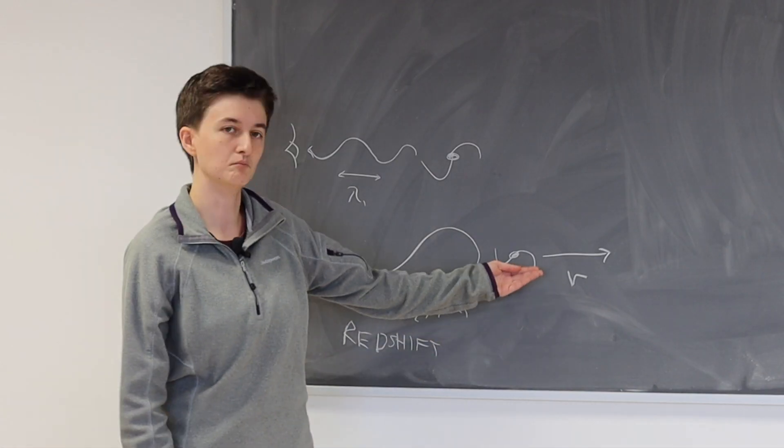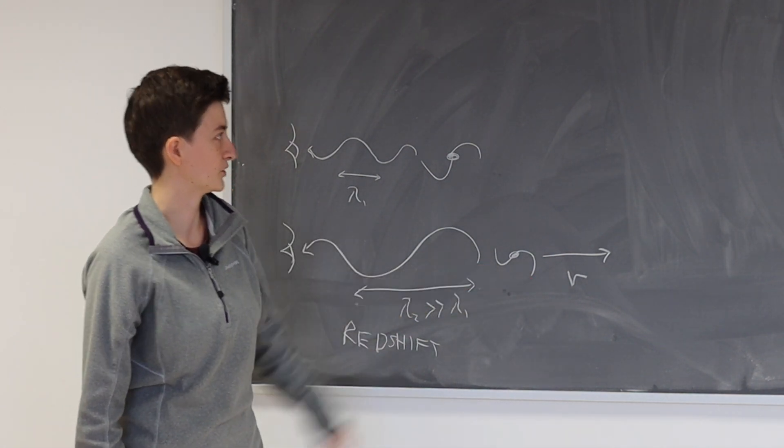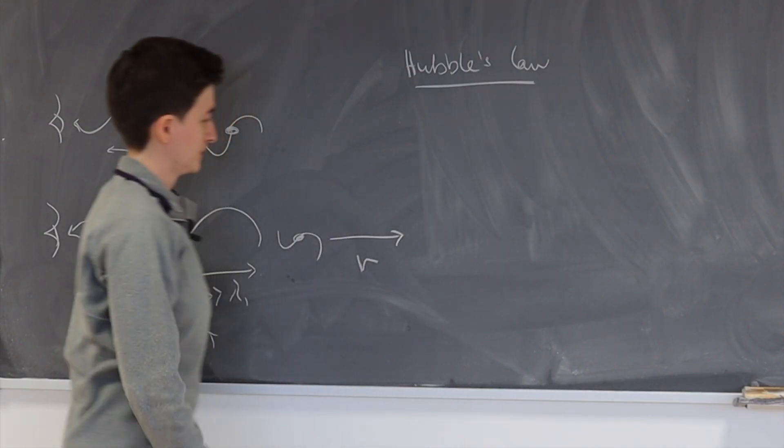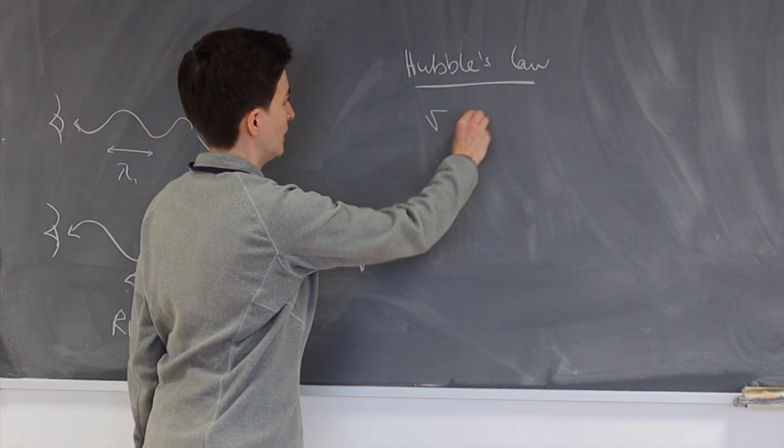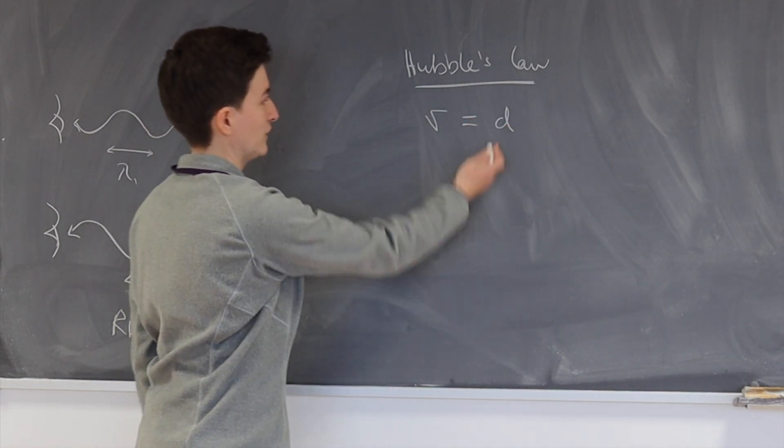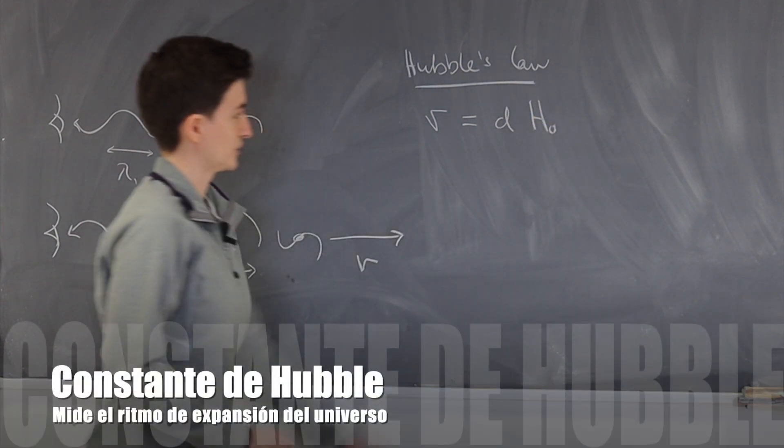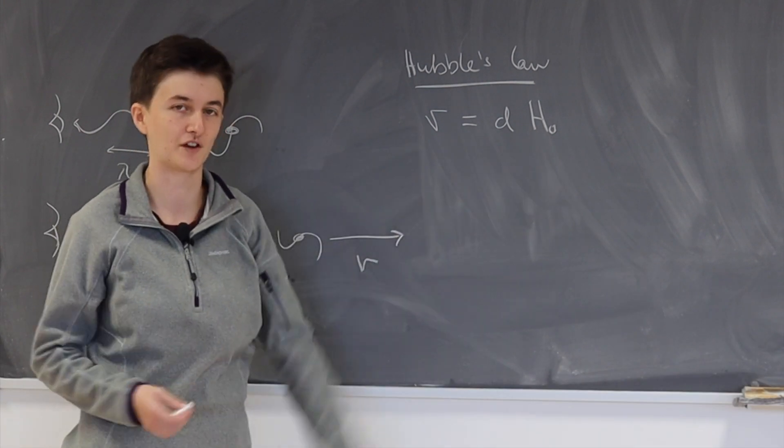So from this realisation that more distant galaxies were travelling away from us, Edwin Hubble constructed what's known as Hubble's law, which says that the recession velocity of a galaxy, v, is equal to its distance away from us, d, multiplied by a constant H0 or H naught, 0 being an old-fashioned word for zero.